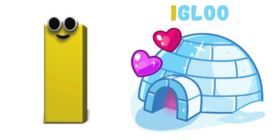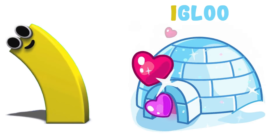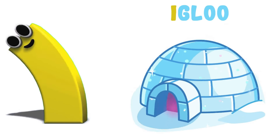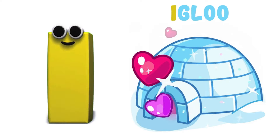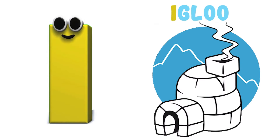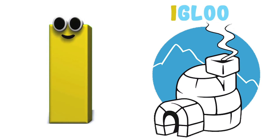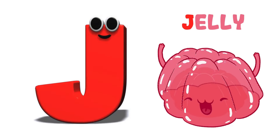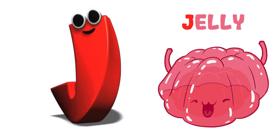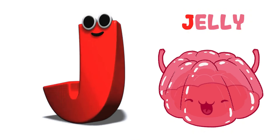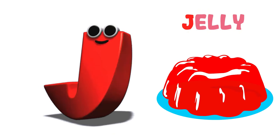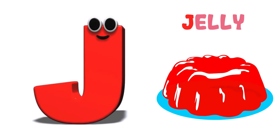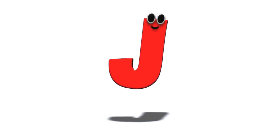I is for igloo. i-i-igloo, i-i-igloo, i-i-igloo. J is for jelly. j-j-jelly, j-j-jelly. j-jelly, j-jelly.